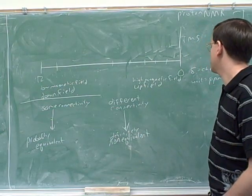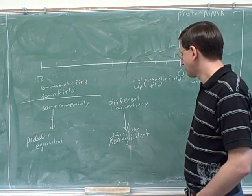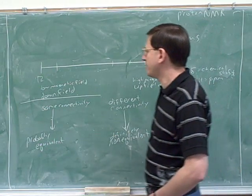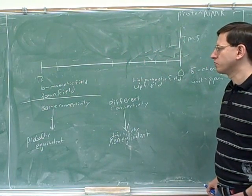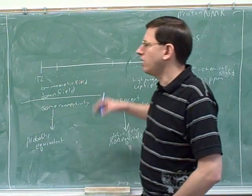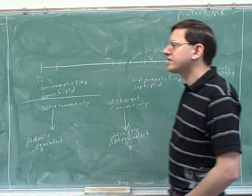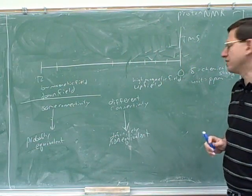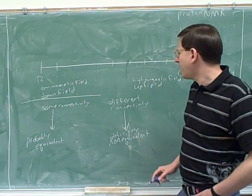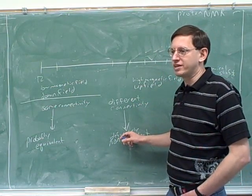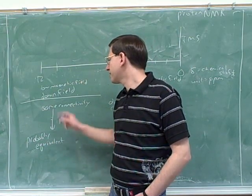We'll do the chemical shift. Remember that in this experiment we start with a low magnetic field and keep increasing it continuously, measuring at what field levels we get absorptions. Also, to back up for a second: if two hydrogens have different connectivity, they're definitely going to give different peaks — they're definitely not equivalent. If they have the same connectivity, though, they're only probably equivalent.